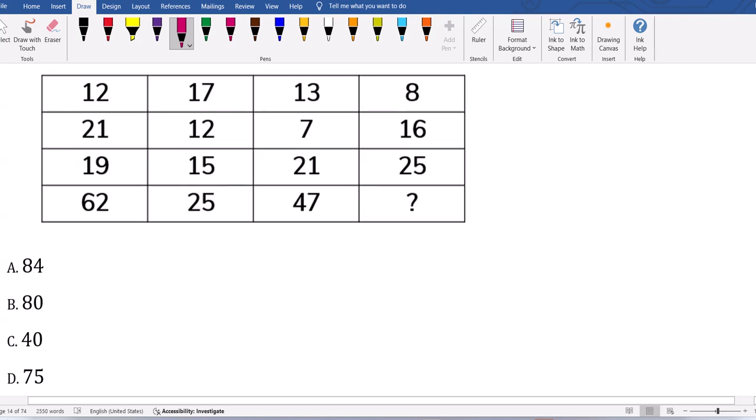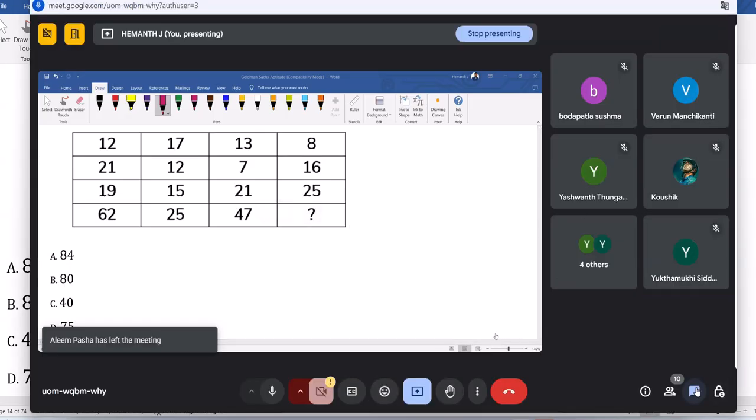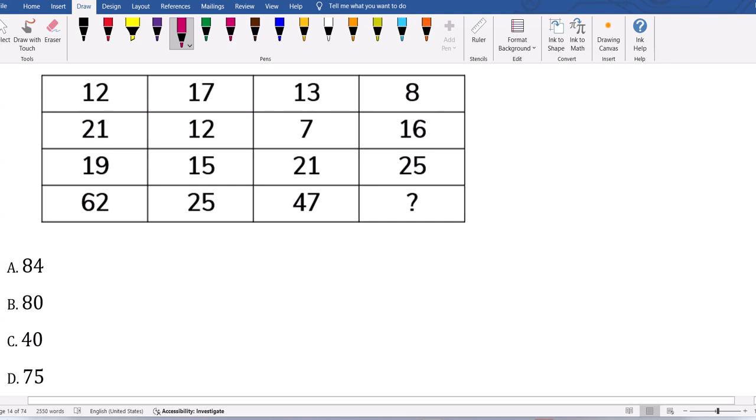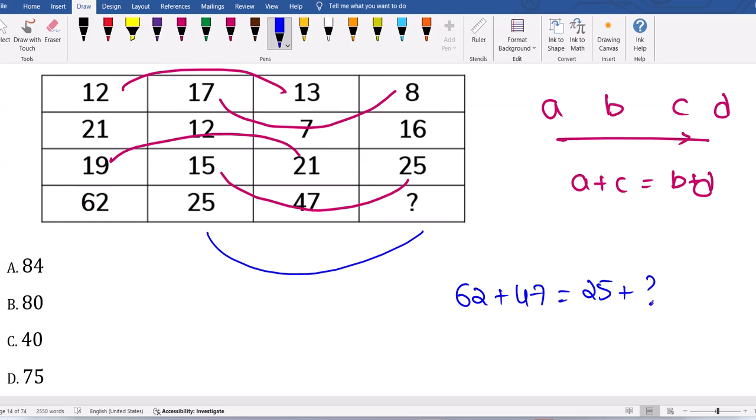Now try this similar question. The answer 5 is correct for the previous. In this question, we have rows where a plus c equals b plus d. Looking at the pattern: 5 and 21 make 40, 15 and 25 make 40. Now 62 plus 47 must equal 25 plus something ending with 9. That's 109, so 84 is required. This is numerical reasoning.